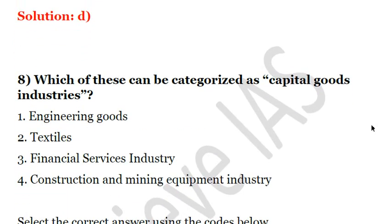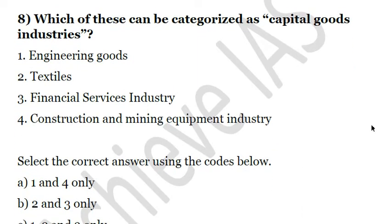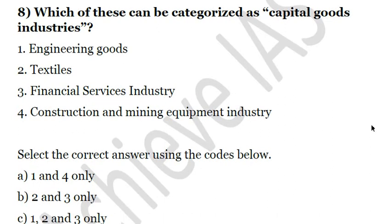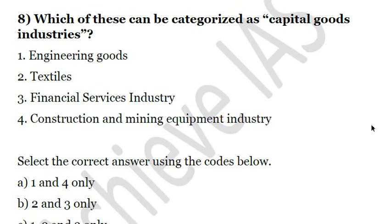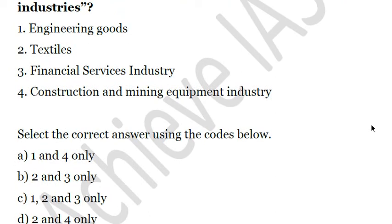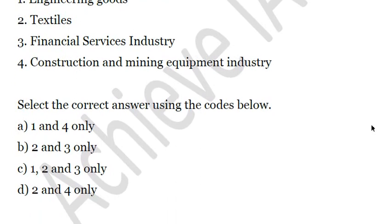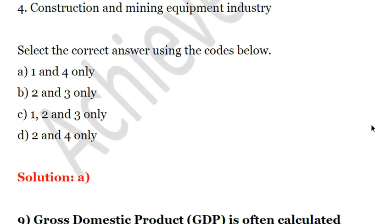Next question: which of these can be categorized as capital goods industries? First, engineering goods. Second, textiles. Third, financial services industry. Fourth, construction and mining equipment industry. The capital goods industries are engineering goods and the construction and mining equipment industry. So the answer would be one and four only. The answer is A.